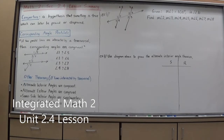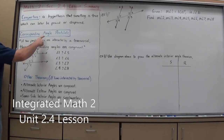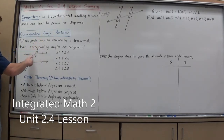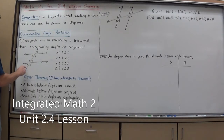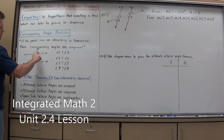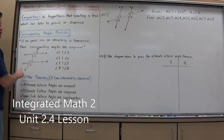A transversal is any line that's coming through and intersecting through two different lines at two different spots. You can see here I have parallel lines cut by a transversal.